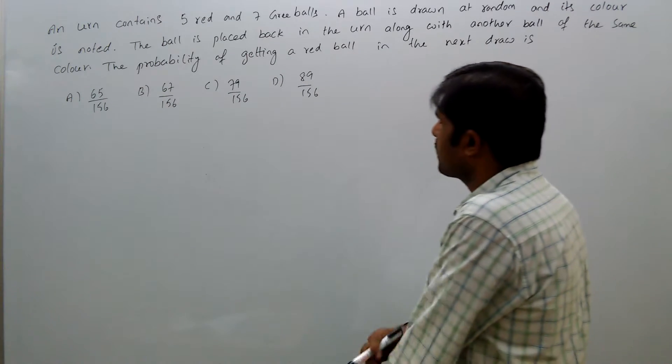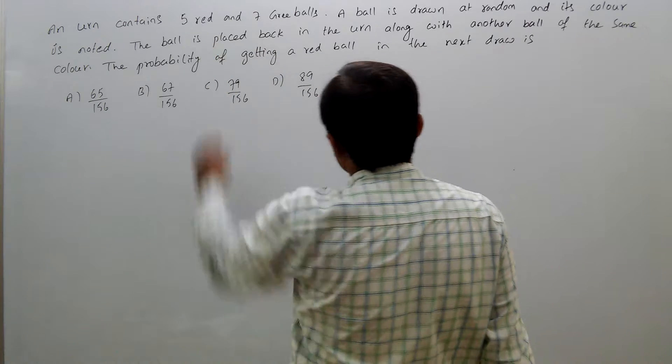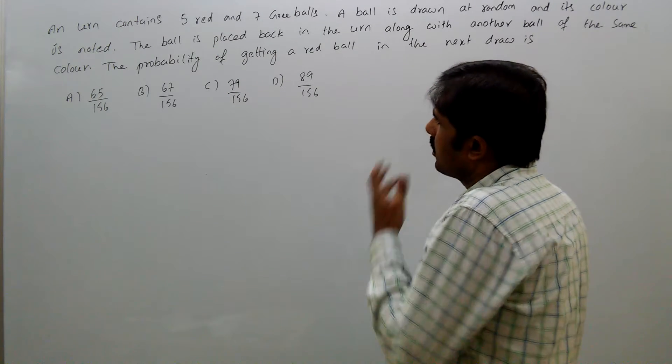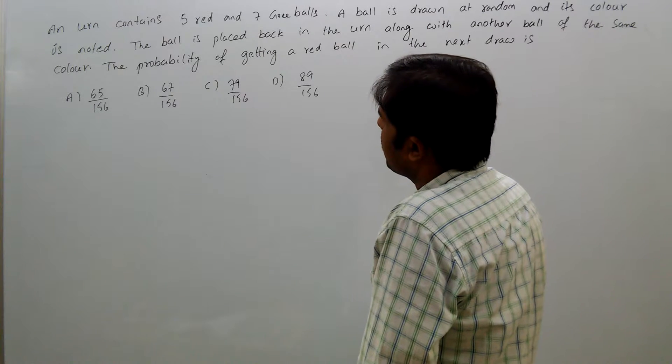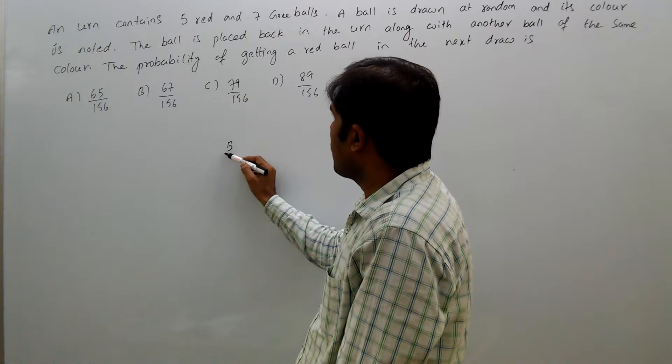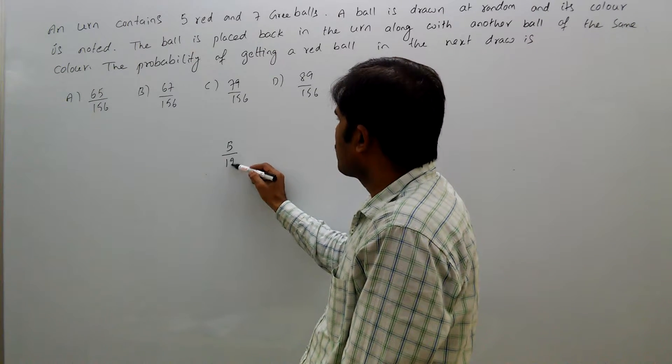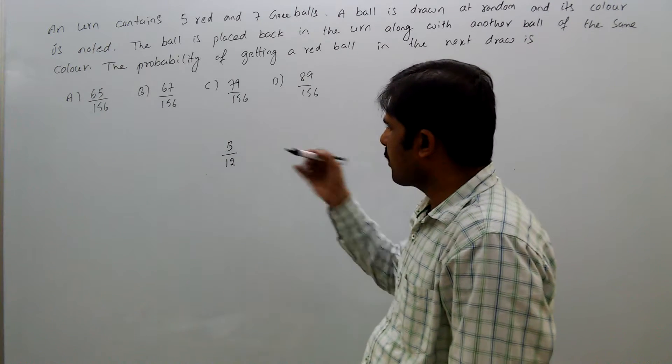Here there are two possibilities in the first attempt. When you draw the ball, it may be red or green. What is the probability of getting a red ball? First of all, getting red is 5 by 12.